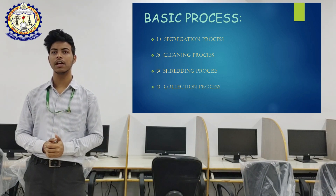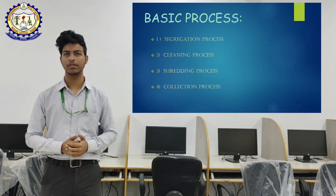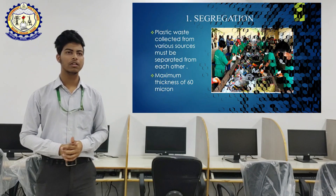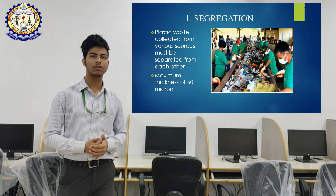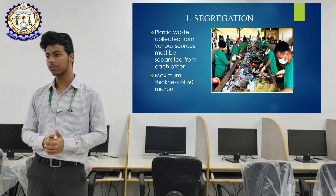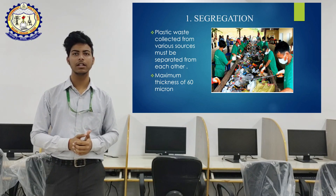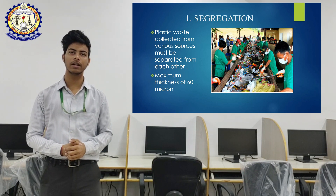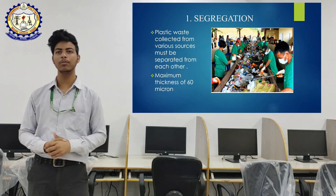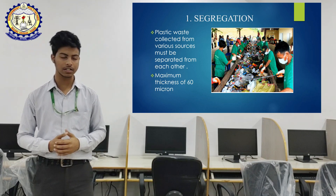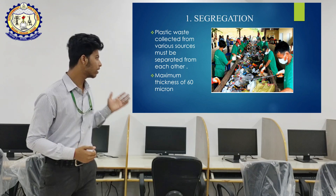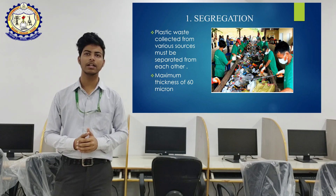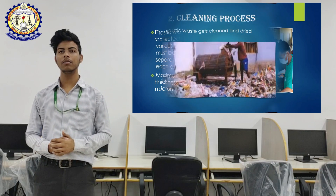In the segregation process, the plastic waste collected from various sources must be separated from each other. Plastic with a maximum thickness of 60 microns is segregated, as we can see in the picture shown here.